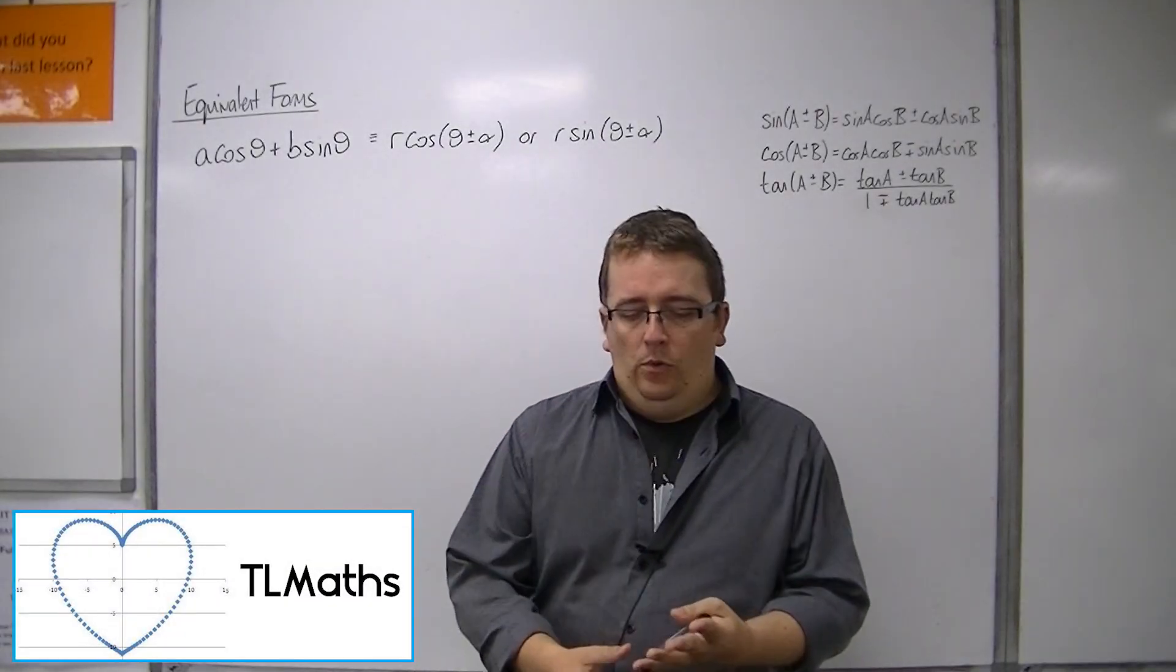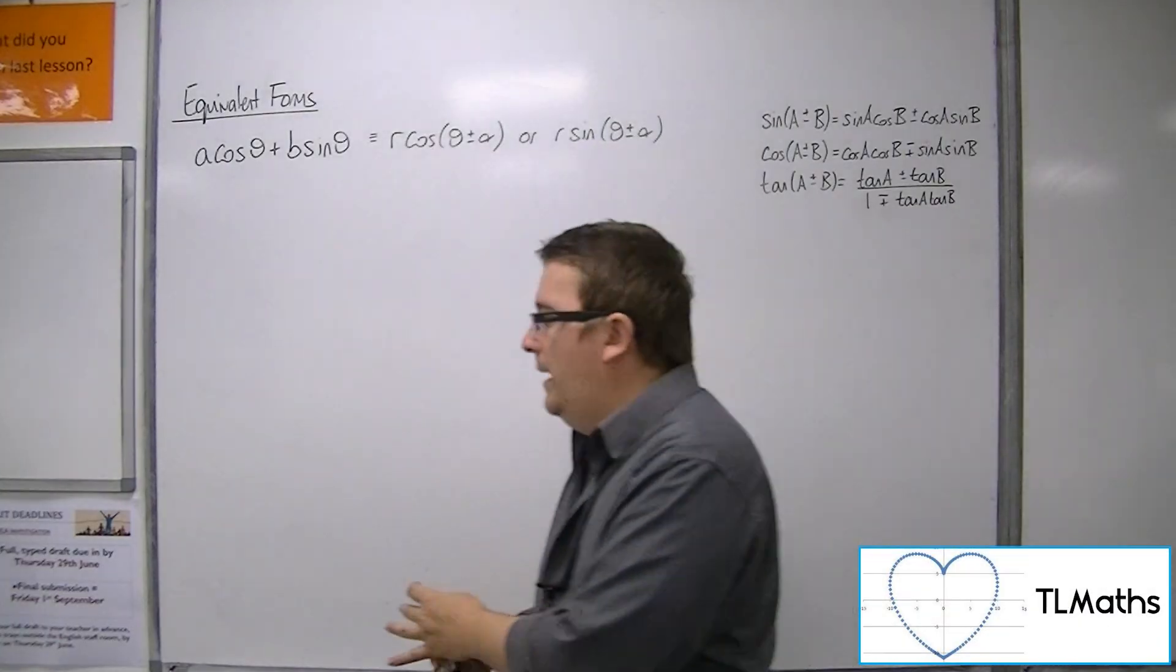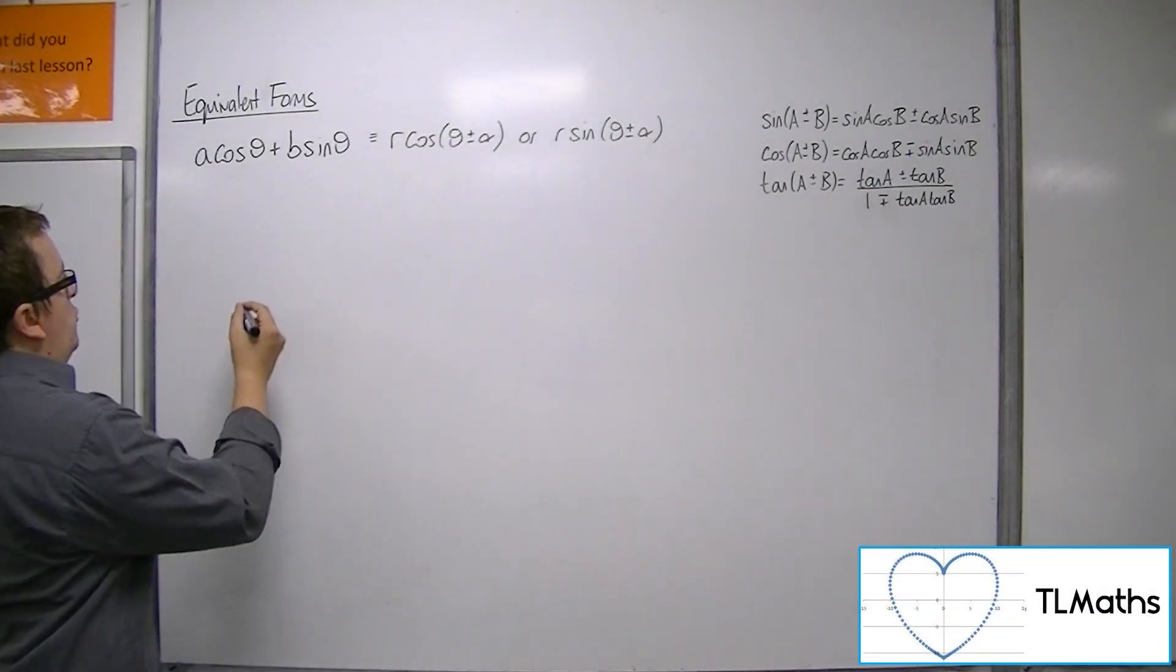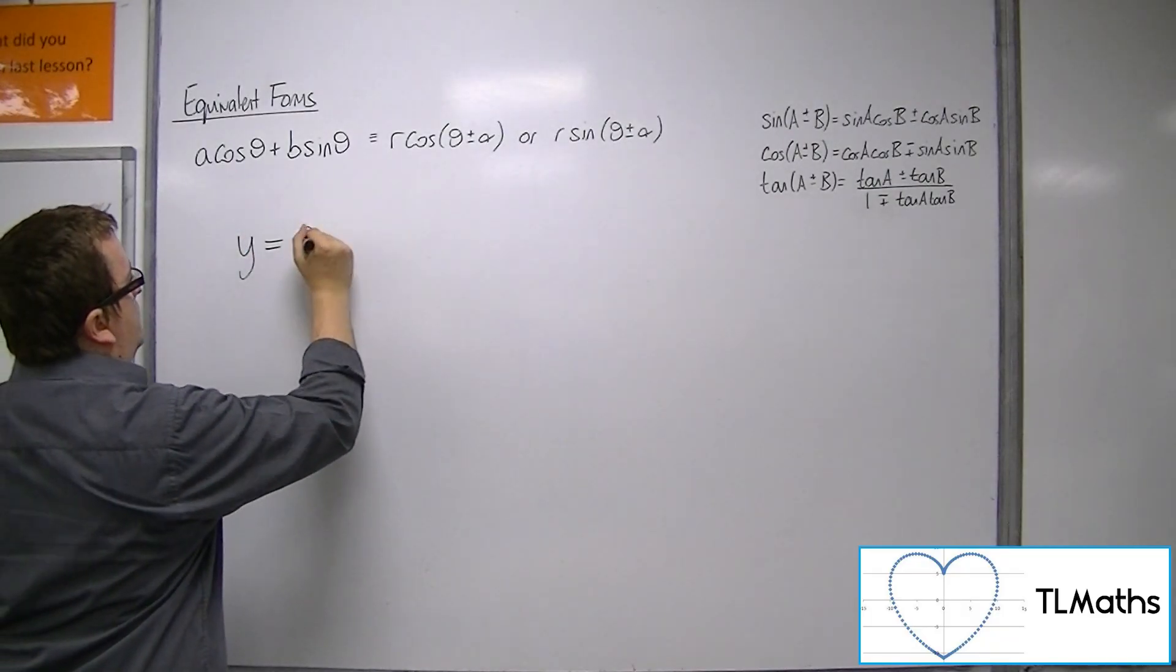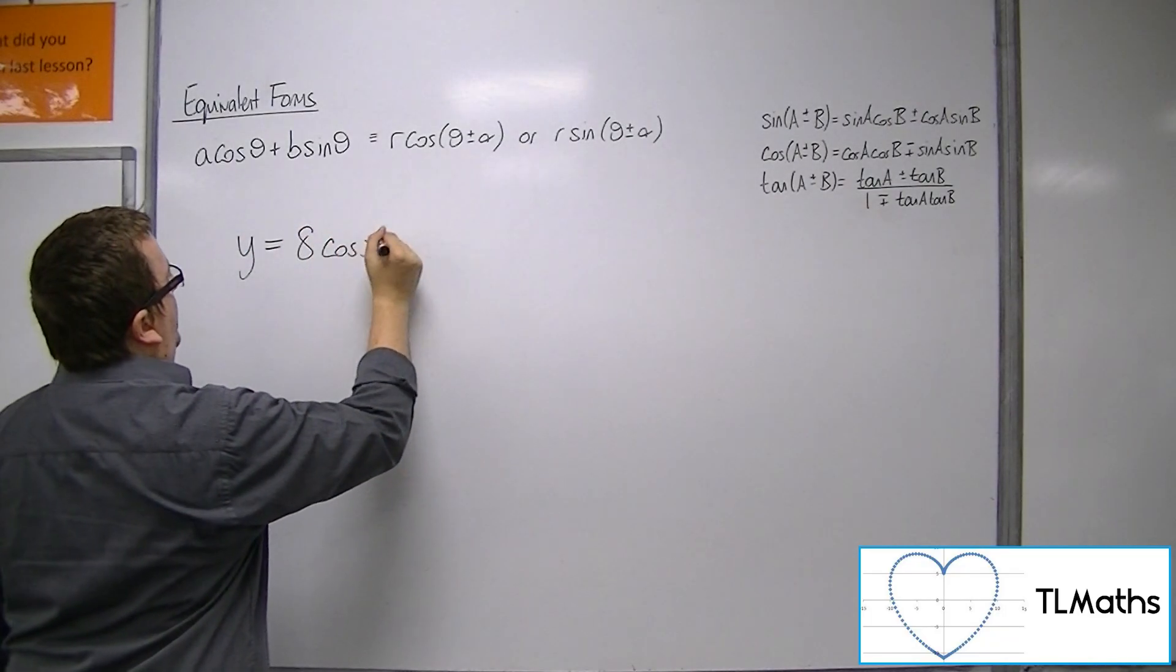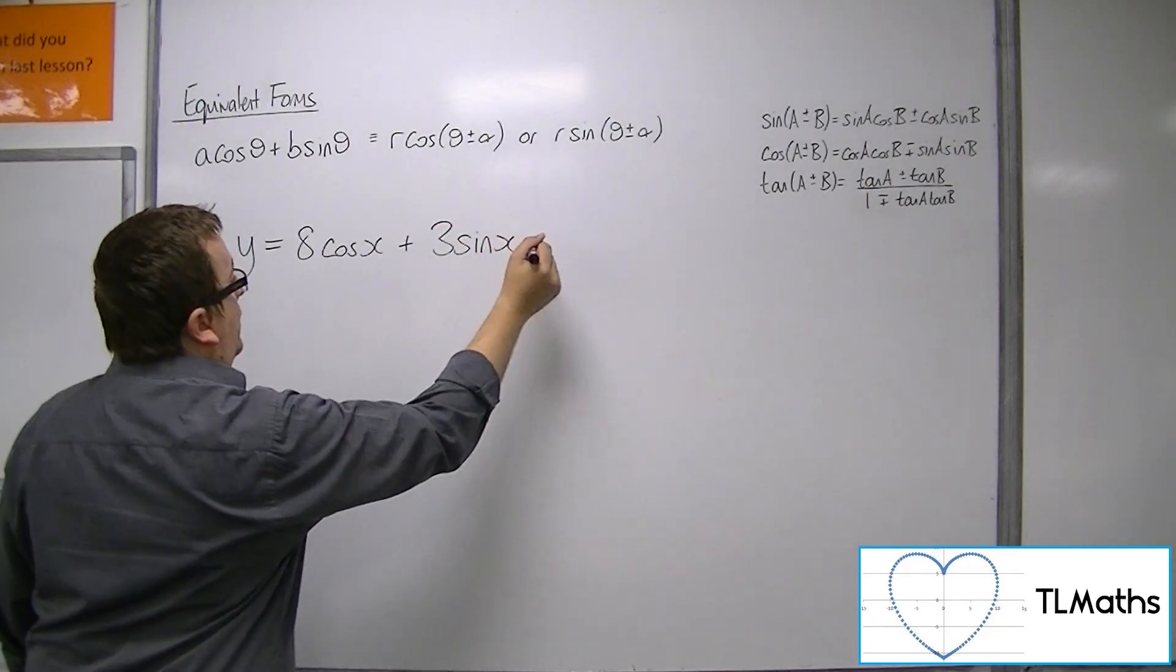If you go on to either Autograph, Desmos, or GeoGebra, or some other graphing package, and you try and graph y equals, I don't know, 8 cos x plus 3 sin x, for example.